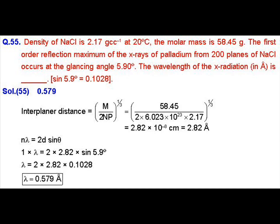Substituting all the values we get the interplanar distance as 2.82 × 10⁻⁸ centimeter or 2.82 angstrom. Now using Bragg's equation with n equal to 1 for the first order reflection: n × lambda = 2 × d × sin(theta), where theta is 5.9 degrees. Substituting all the values we get the wavelength lambda as 0.579 angstrom.